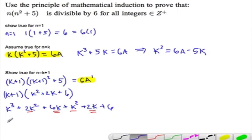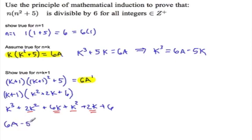So k cubed, I'll just substitute now. We have 6a minus 5k plus, that's not right, plus 3k squared plus 8k plus 6.